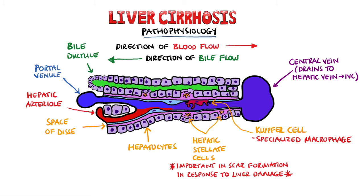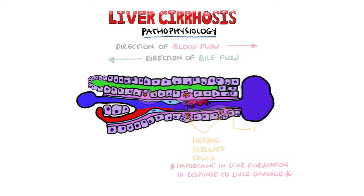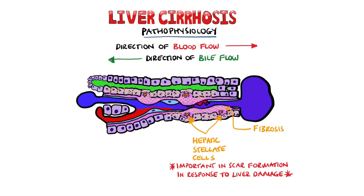Regardless of what causes the damage, the end result is very similar, with only the pattern of fibrosis changing. Initially, there is an insult that leads to inflammation and formation of scars coming from the hepatic stellate cells. The fibrosis pushes against the sinusoid and leads to an increase in the resistance to the flow of blood. The remaining healthy hepatocytes then proliferate and end up taking the shape of nodules, which squeeze the portal vein branches within the liver, leading to portal hypertension.